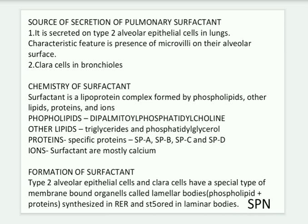The surfactant is formed by phospholipids, other lipids, proteins, and ions. The major phospholipid surfactant is dipalmitoyl phosphatidylcholine (DPPC). Other lipids include triglycerides and phosphatidylglycerol. The proteins are SP-A, SP-B, SP-C, and SP-D; SP-A and SP-D are hydrophilic, while SP-B and SP-C are hydrophobic. Ions are mostly calcium ions.